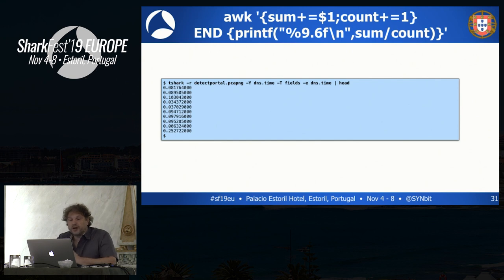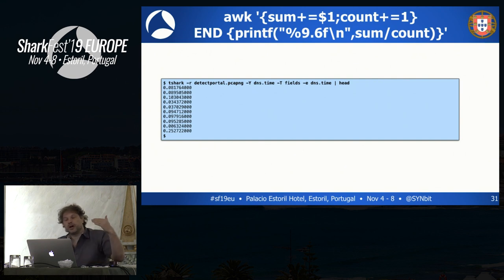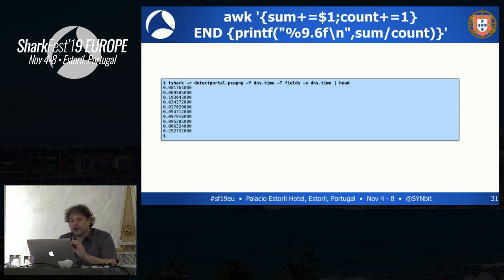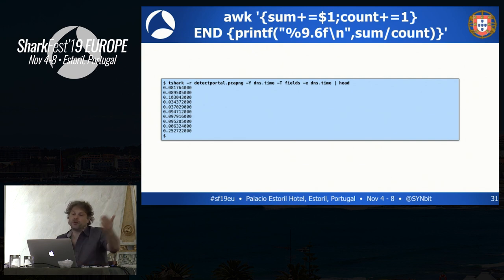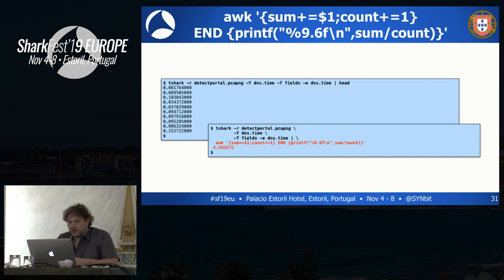If you want to calculate an average, you can use AWK to do this. AWK is like a programming language — it will read every line and then fire up the script for every line it reads. In this case, I output the DNS time, so I have a list of response times. I add them up with a sum function, count the number of items, and then in the end — after all lines have been processed — I have an END event which prints sum divided by count, which calculates an average. Let's do a demo.